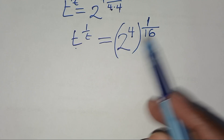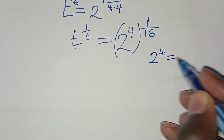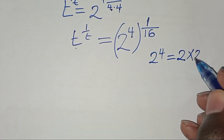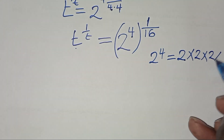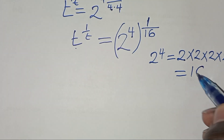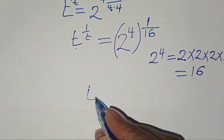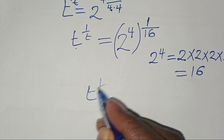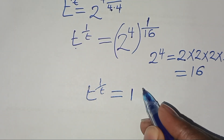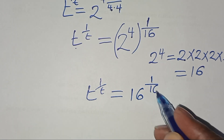As you can see, 2 to the power 4 is the same as 2 times 2 times 2 times 2, which equals 16. Substituting this, we have t to the power (1 over t) is equal to 16, raised to the power (1 over 16).